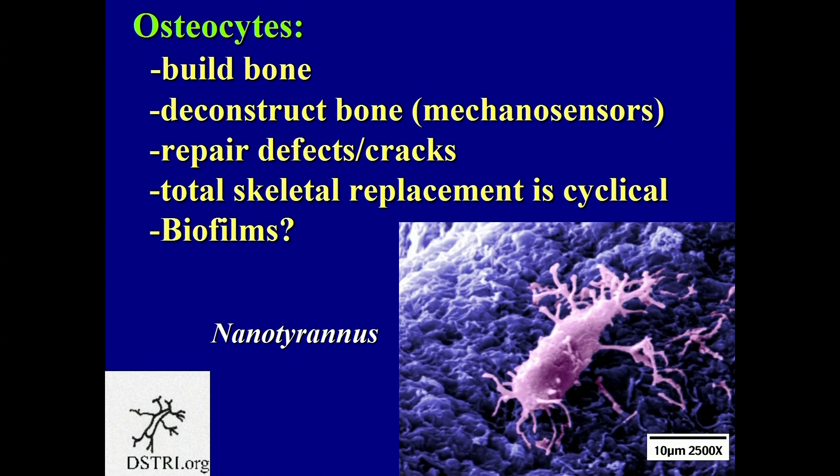These cells build your bone, they deconstruct the bone, and they're mechanosensors — sensing mechanically the cracks and things in your bones that need repair. They repair those cracks and replace your skeleton just about every 15 years.